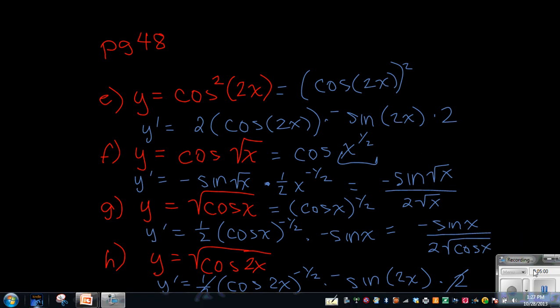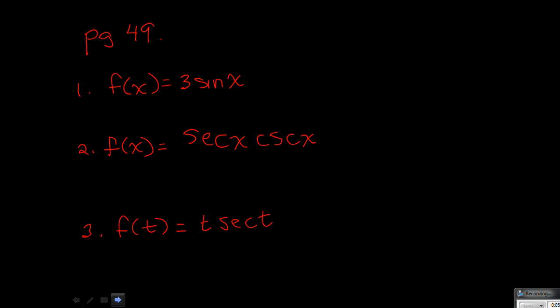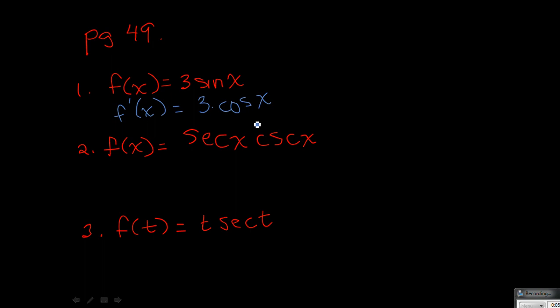Now we're going to go on to page 49, which is where the problems start getting a little bit more complicated. I went ahead and made up some similar problems here just to use them. So on this first one, it would be 3 sine x as our example. The 3 stays out front, and then the derivative of sine is cosine x, so that would be your answer: 3 cosine x.